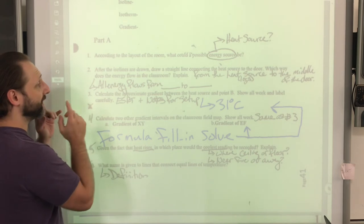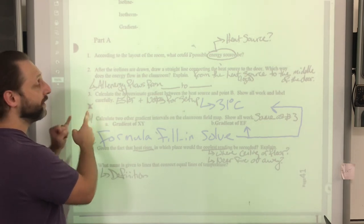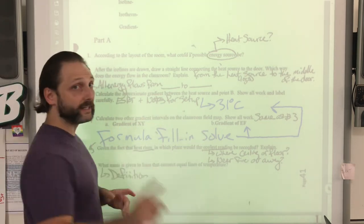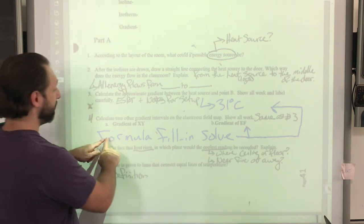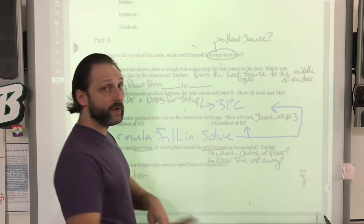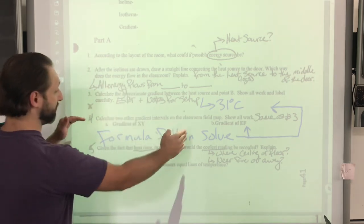Down here in three, you're calculating gradient. Four, A and B, you're calculating gradient. You're going to use the formula. You're going to fill it in. You're going to solve it with correct units for each of these.